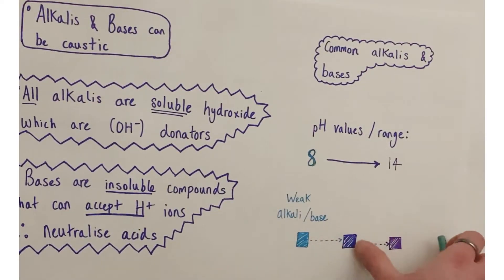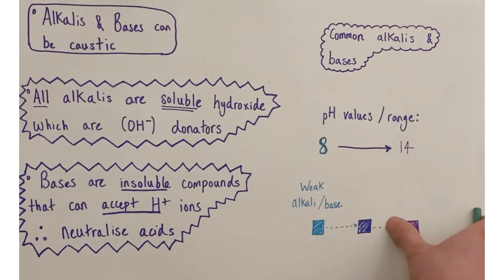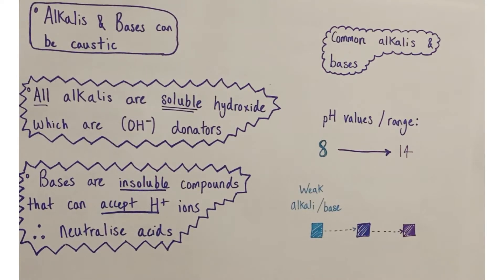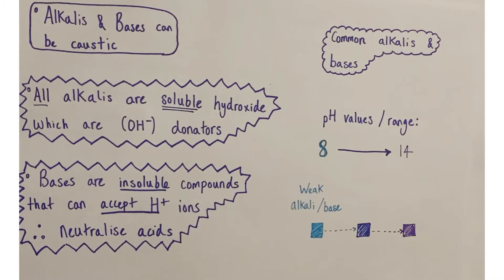Alkalis and bases are described as caustic rather than corrosive, though the effect on organic tissue is similar. Students often struggle to differentiate them. All alkalis are soluble hydroxides — usually metal hydroxides — which are able to donate OH⁻ ions. The key take-home for alkalis is they must be soluble and dissolve in water; otherwise they are classified as a base. They neutralize acids by releasing hydroxide ions into solution.